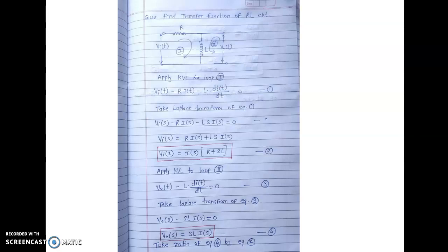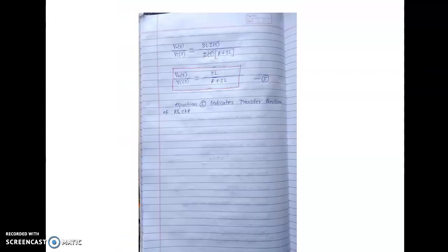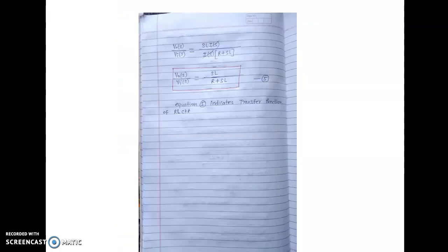There is also a simple shortcut technique to remember. Because we are finding the voltage across the inductor, the transfer function equals the voltage drop across the inductor divided by the sum of voltage drops across the resistor plus the inductor, multiplied by the input voltage. That gives SL / (R + SL). Using this voltage divider shortcut method, we directly get the transfer function SL / (R + SL). This is your final answer — the transfer function of the RL circuit measuring output voltage across the inductor.